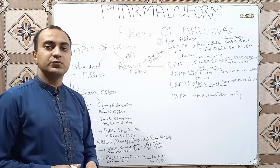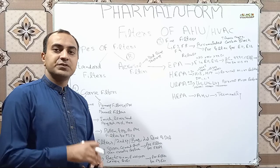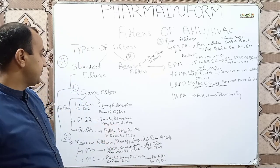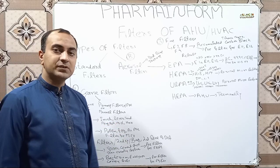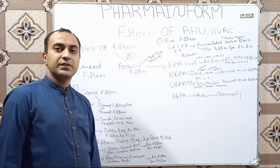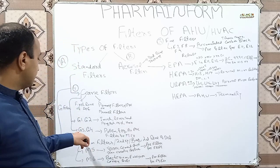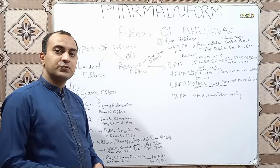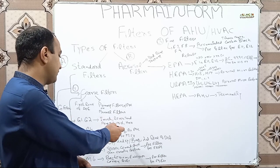G1 and G2 filters are used basically for protection from insects, filtration of leaves, sand particles, flying ash, mist, or to remove hairs present in the air. The G3 and G4 filters are used for removing pollens and fog present in the air, and these are also used as pre-filters for the F7 and F8 filters.